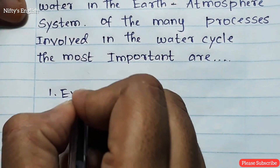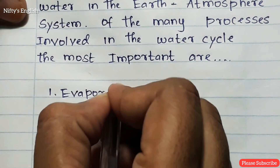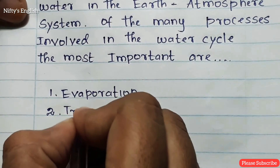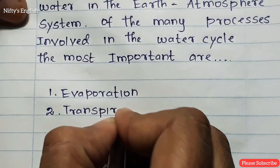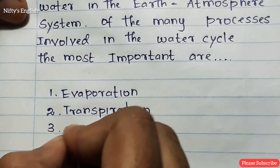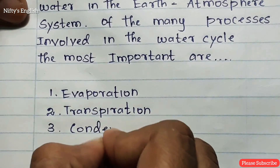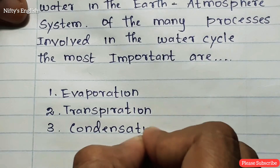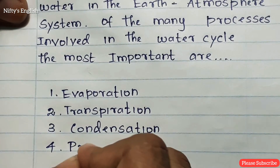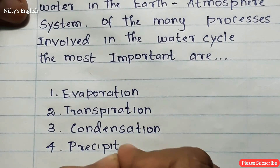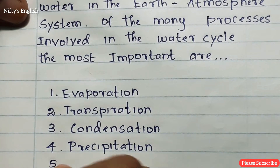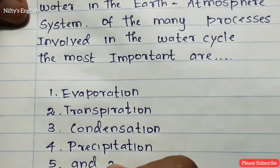Number one: evaporation. Number two: transpiration. Number three: condensation. Number four: precipitation. Number five: runoff.